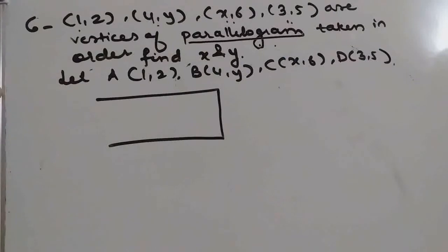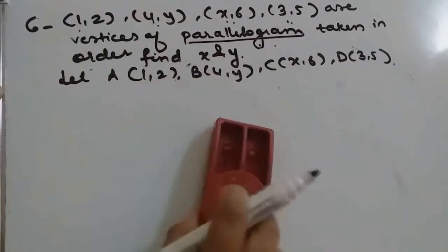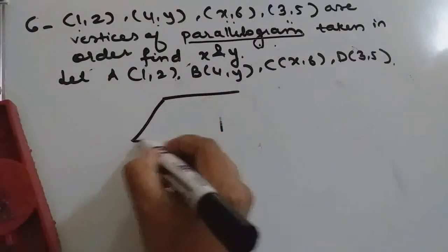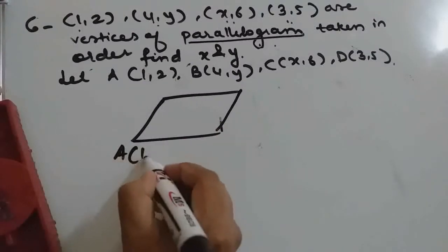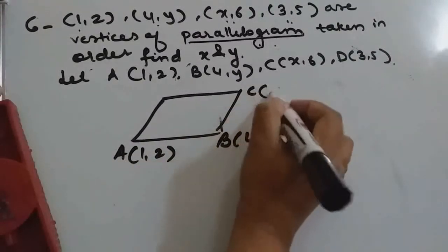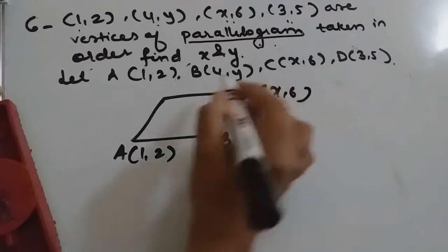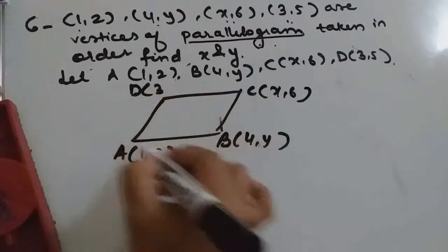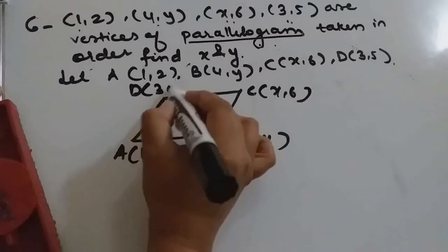So suppose ABCD is a parallelogram. Taken in order means you should follow one order, so here I followed anticlockwise.